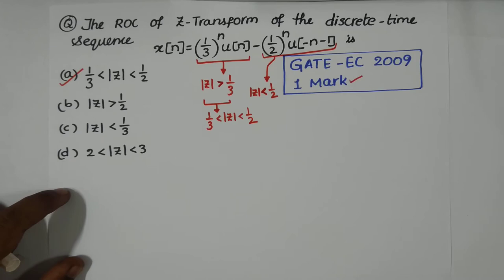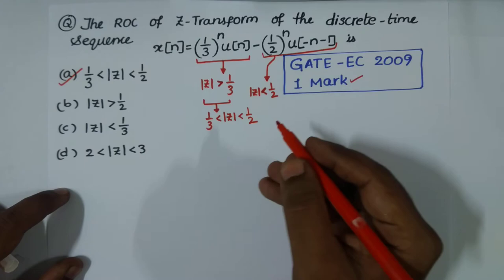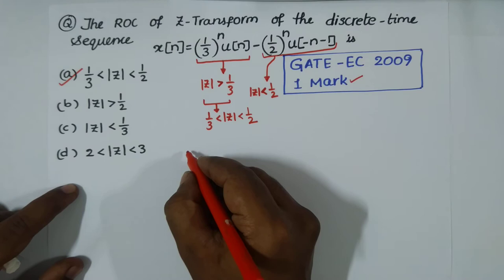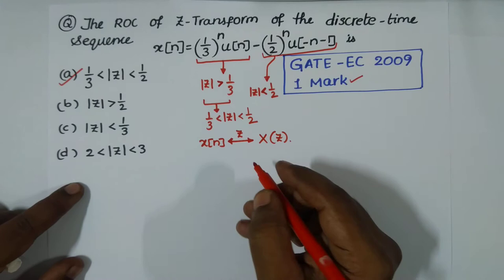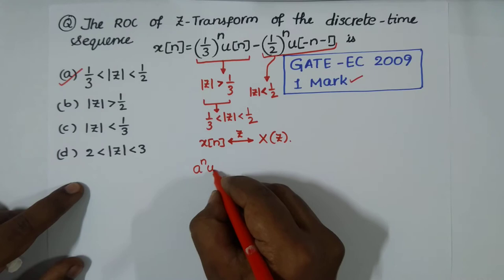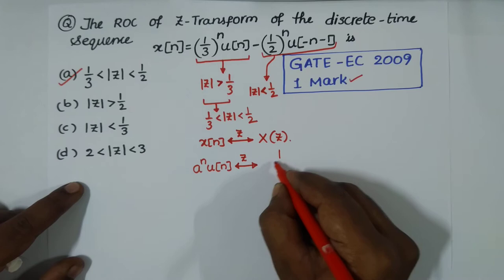So option A is correct — approximately one second to decide the correct answer. If you want to see the details, let's go through it. Say I have a signal x[n], and x[n] has Z-transform X(z). Let me take x[n] = a^n u[n].